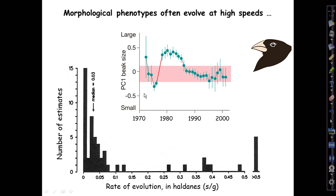We've already seen examples of very fast contemporary adaptive evolution in the natural selection topic we considered just a few weeks ago. Here are two figures from those lectures: changes year by year in beak size in Darwin's medium ground finch, studied by the Grants, with a red segment showing the sharp increase in beak size — paralleled by body size generally — in response to the drought of 1977, and then a slower rate of change wandering back toward where the population had been before. The lower panel is a histogram of the rates of evolution in Haldanes, cataloged by Hendry and Kinnison in their classic first review of contemporary adaptation by natural selection.